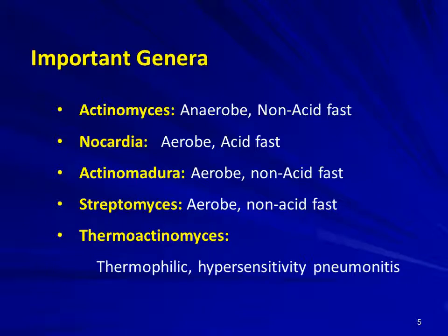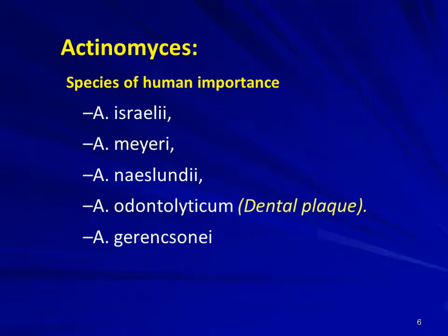Important genera include Actinomyces, which is anaerobic and non-acid-fast; Nocardia, which is aerobic and acid-fast; Actinomadura, which is aerobic and non-acid-fast; Streptomyces, which is aerobic and non-acid-fast; and Thermoactinomyces, which consists of thermophilic species responsible for hypersensitivity pneumonitis.